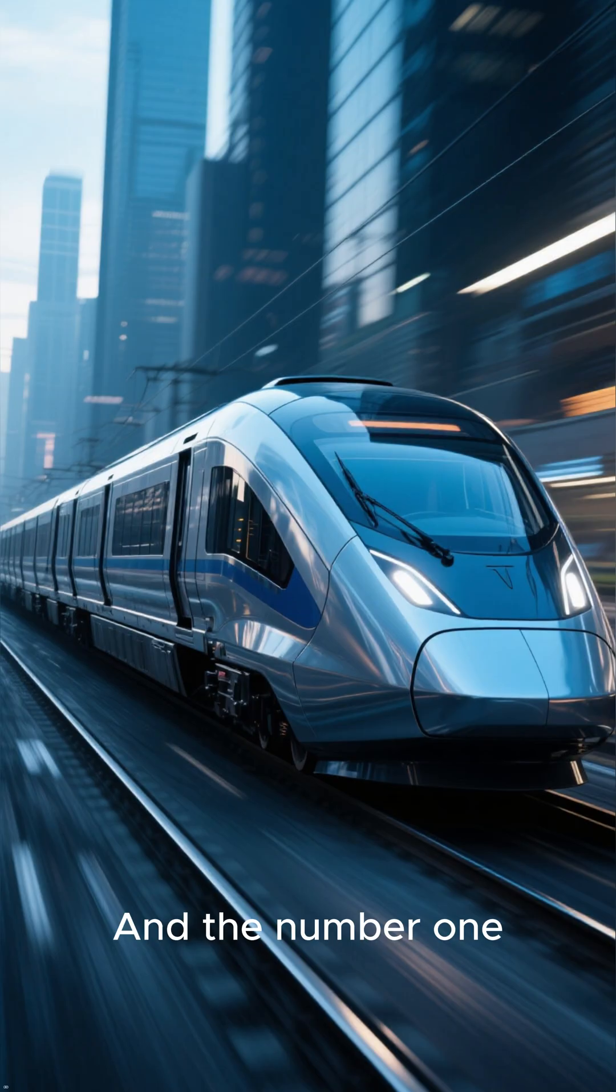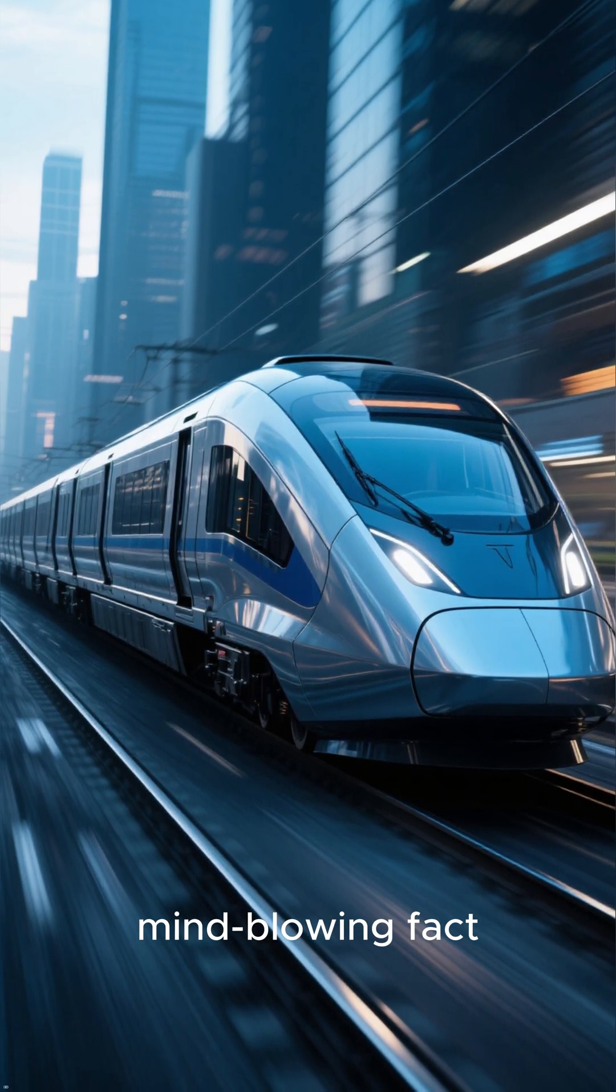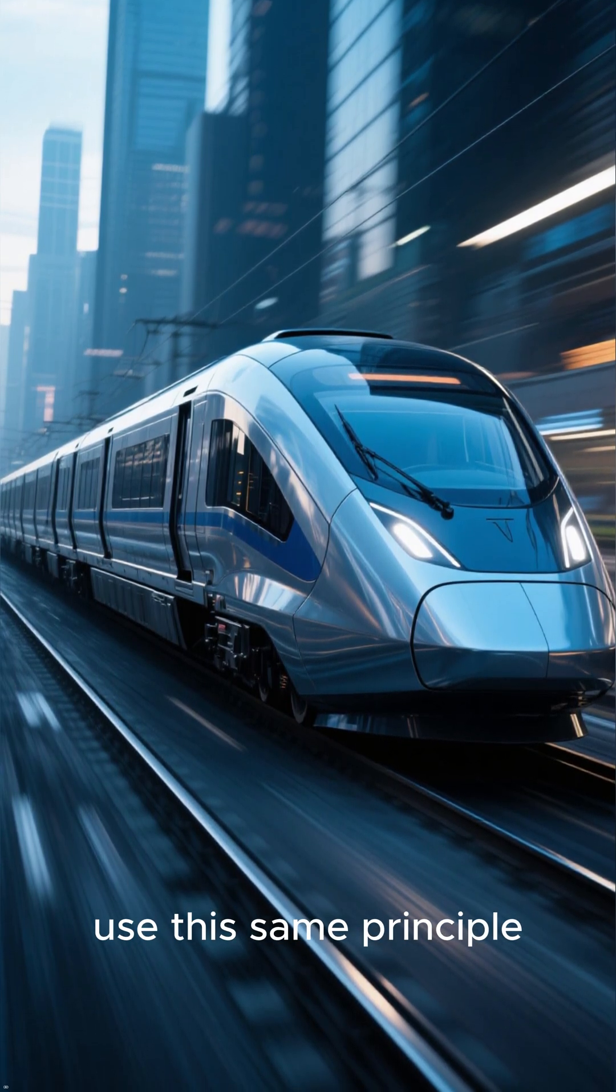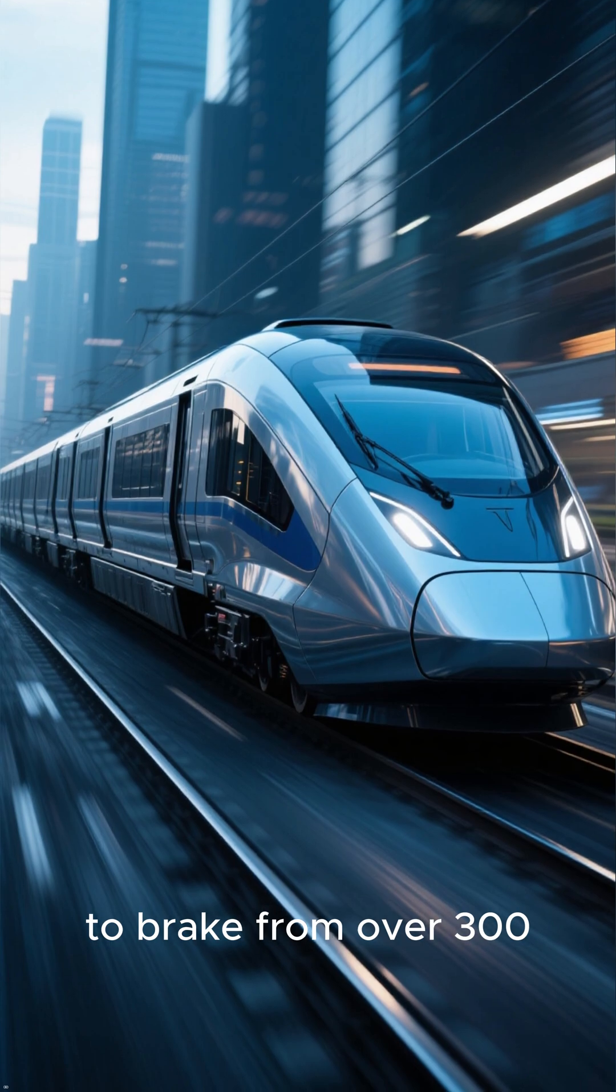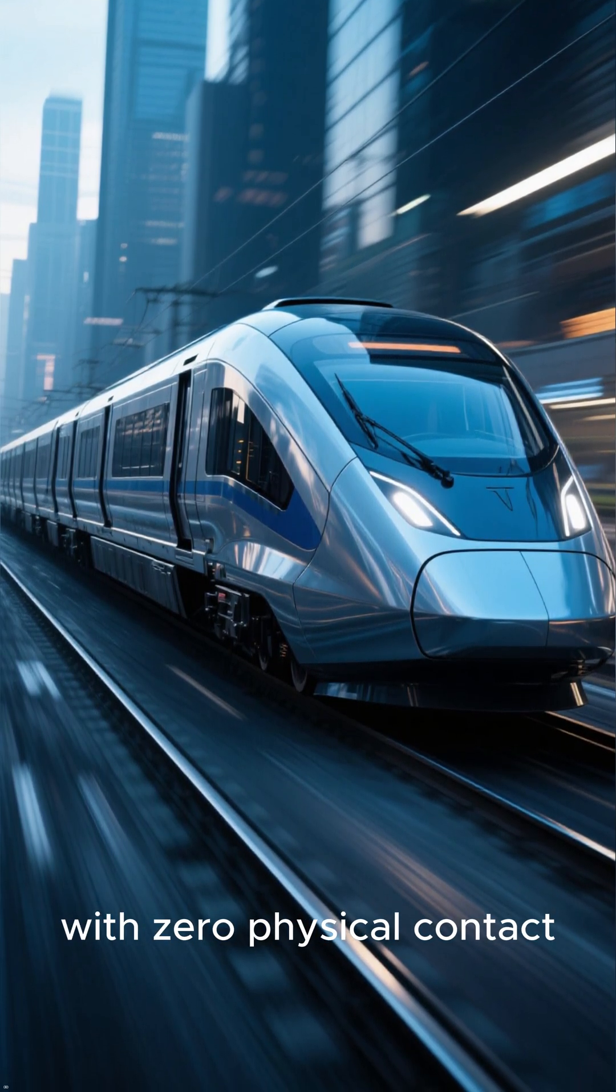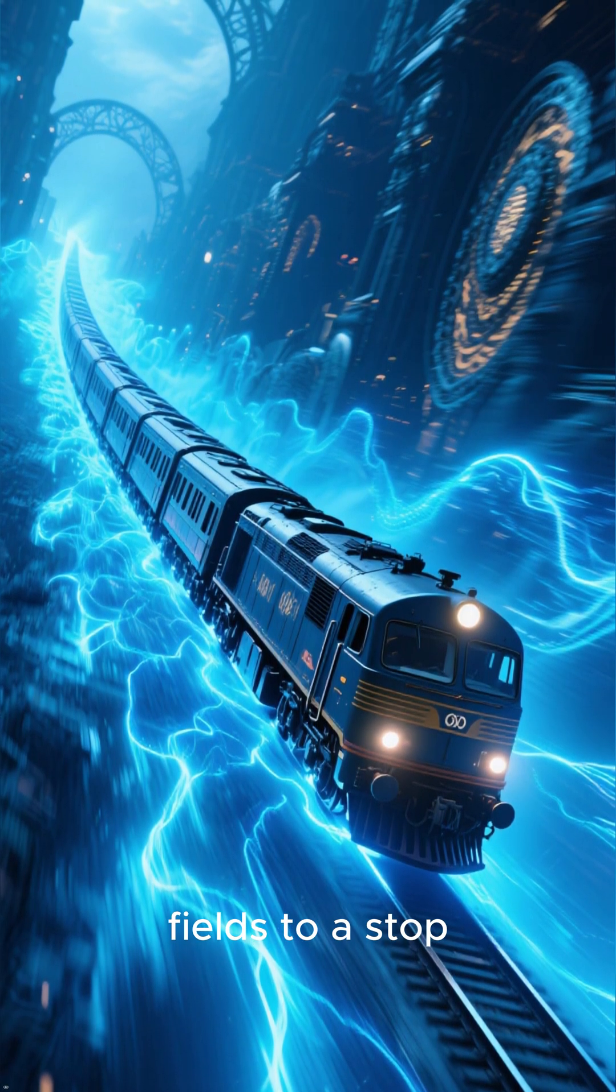And the number 1 mind-blowing fact: high-speed trains, like maglevs, use this same principle to brake from over 300 miles per hour with zero physical contact. They literally surf on magnetic fields to a stop.